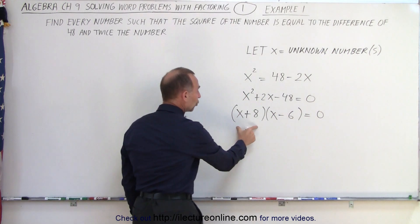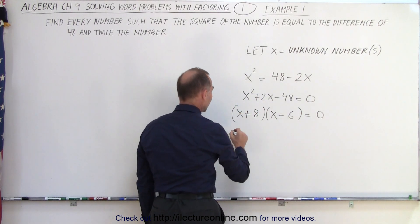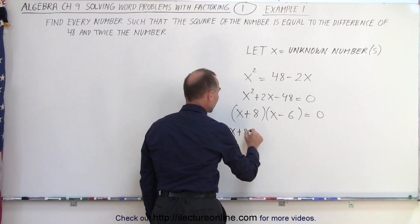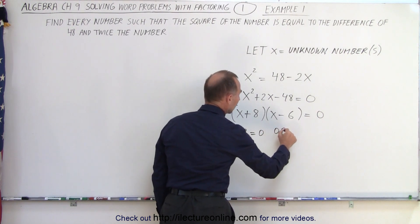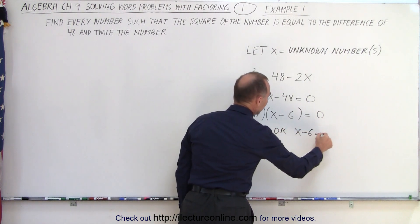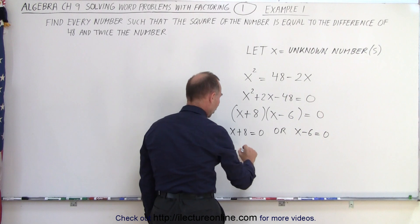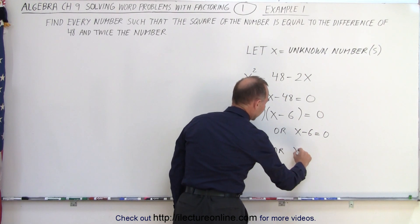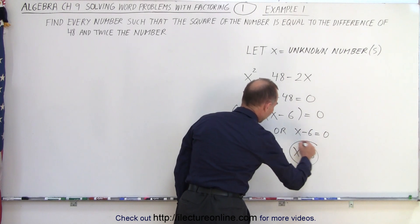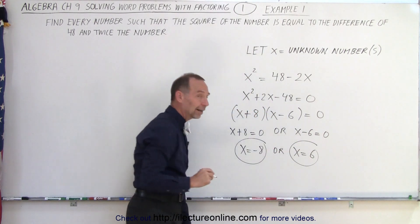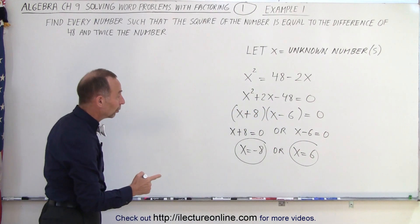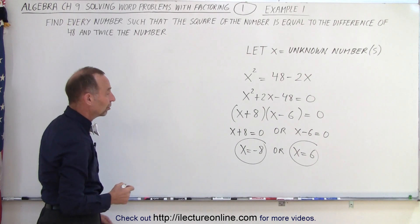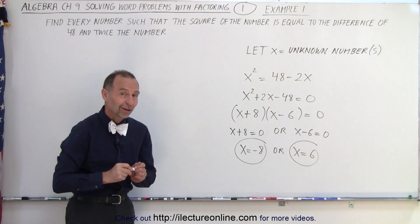Now since I have two binomials multiplied together that give me 0, that means either x plus 8 equals 0 or x minus 6 equals 0, which means the two solutions are x equals negative 8 or x equals positive 6. Those are the two numbers that if you square them will equal 48 minus twice the number. And that is how it's done.